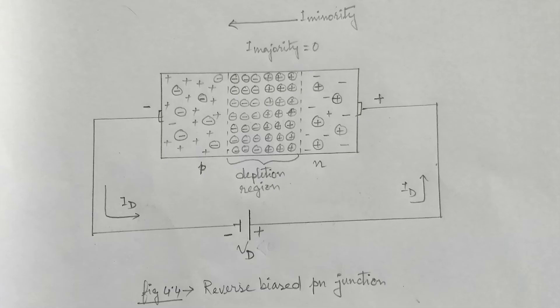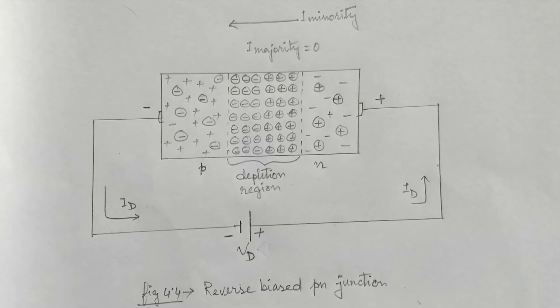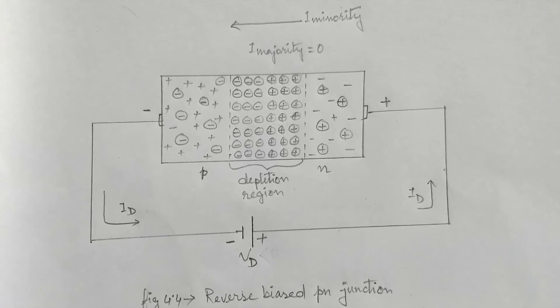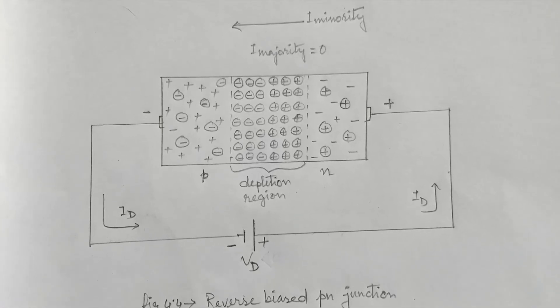Now let us consider the transition capacitance. Here in this case the depletion region acts as a dielectric or insulator medium, and the p-type and n-type material has low resistance. In this way, the diode acts as parallel plate capacitor.